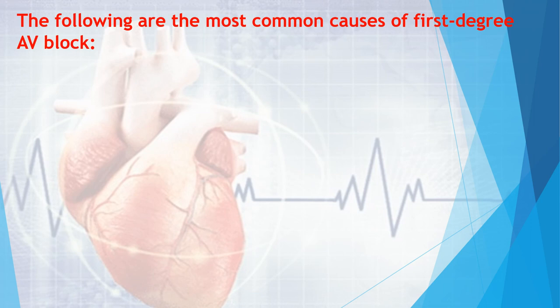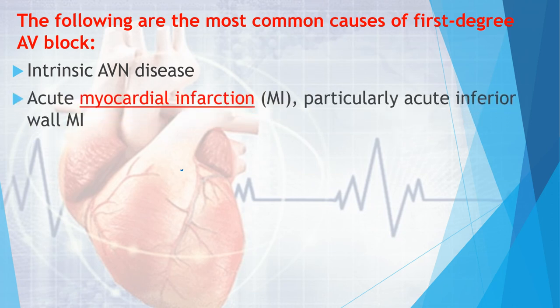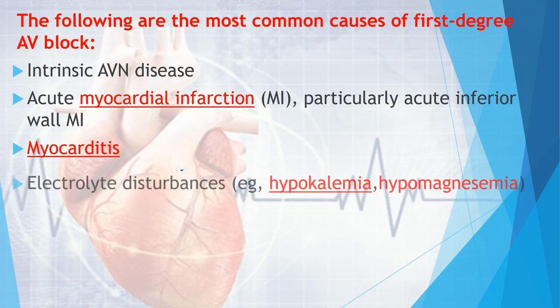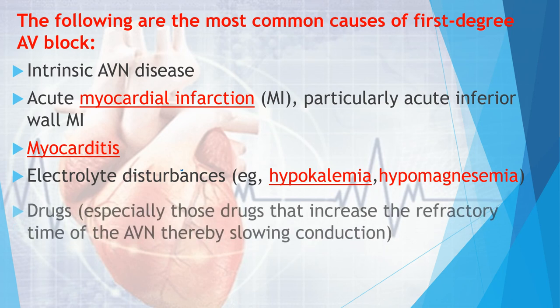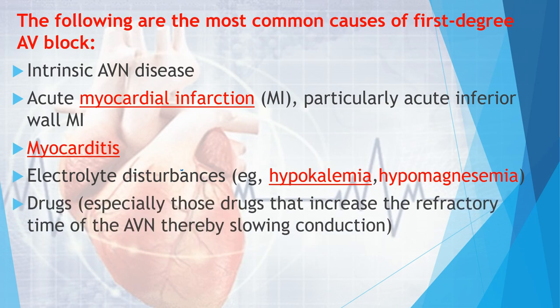The causes of first degree AV block include: intrinsic atrioventricular node disease, acute myocardial infarction (particularly acute inferior wall infarction), myocarditis, electrolyte disturbances like hypokalemia and hypomagnesemia, and drugs which affect AV nodal conduction.